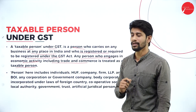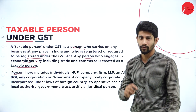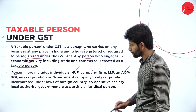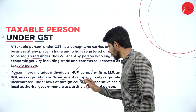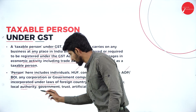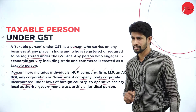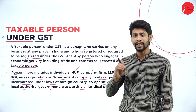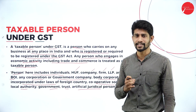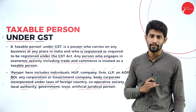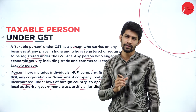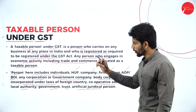The word 'person' here includes an individual, HUF (Hindu Undivided Family), company, firm, limited liability partnership firm, association of persons, body of individuals, any corporation or government company or body corporate incorporated under laws of a foreign country, cooperative society, local authority, government, trust, and artificial judicial person. So who and all will be paying tax to the government — all those people will be called 'person' according to GST law. As an individual, business entity, Hindu Undivided Family, company, foreign company, or government authority — all those paying tax to the government will be called persons according to the GST Act.